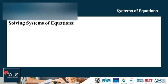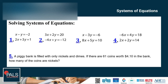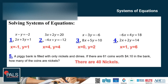Now I want you to try solving the following systems of equations. You can pause the video, then continue when you are done and check your answers. For number 1, x equals negative 1 and y equals 1. For number 2, x equals 4 and y equals 4. For number 3, x equals 0 and y equals 2. For number 4, x equals 1 and y equals 6. For number 5, how many of the coins are nickels? There are 14 nickels.